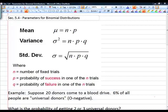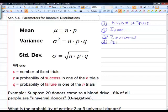Section 5.4 is parameters for the binomial distributions. What are the four conditions that must be met in order to have a binomial distribution? Fixed number of trials, independent trials—that means that the outcome of one trial does not influence the outcome of another trial—only two outcomes, and probability of success must remain constant.